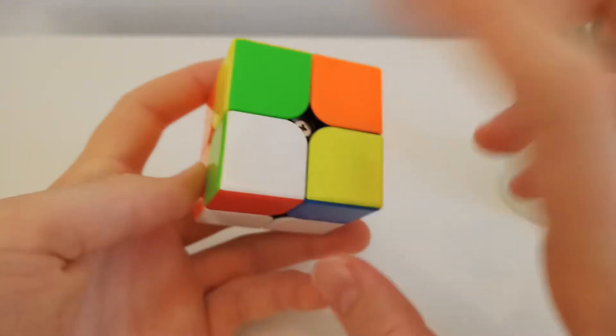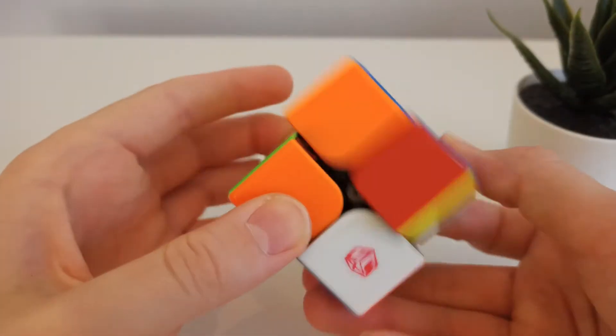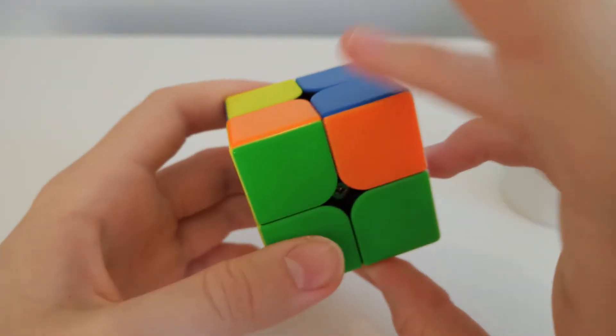So here we can cancel into the insert of this by overshooting a bit with the insert of this one.